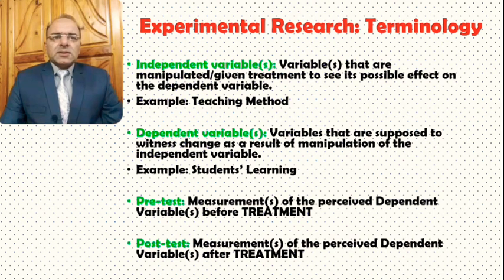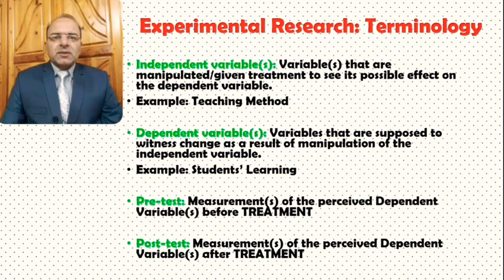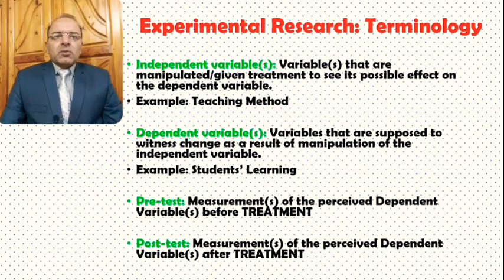Since this is an introduction to experimental research design, we would also like to explain some of the terminology used in experimental research. One of the important terms in experimental research terminology is the independent variable or independent variables — the variables that are manipulated or given treatment to see their possible effect on the dependent variable.